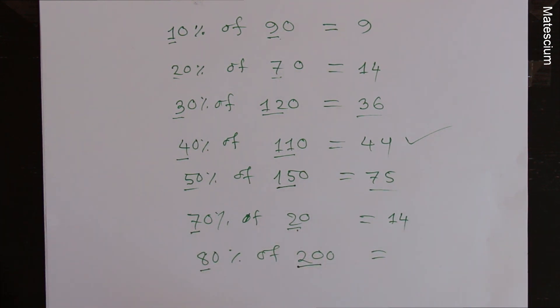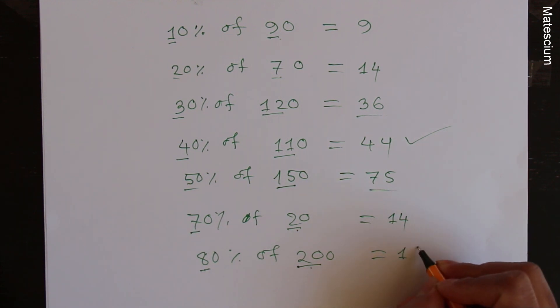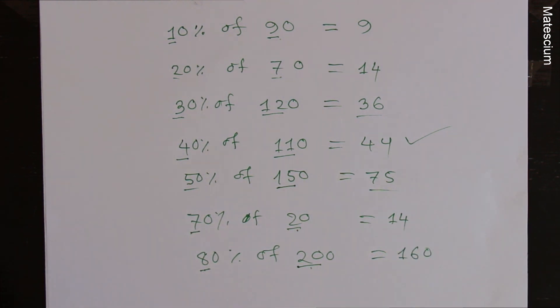8 times 20 is 160. This is very simple, isn't it?